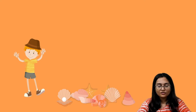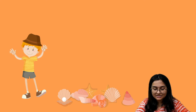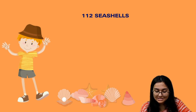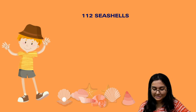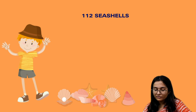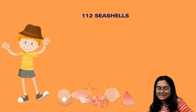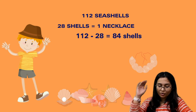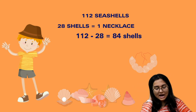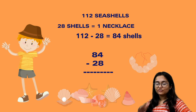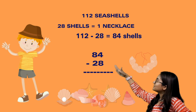Then we have sea shells. Dhruv lives near the sea and thought of making necklaces for his 3 friends. He collected 112 sea shells by evening. He said he would make a necklace of 28 shells — will these shells be enough for all his friends? He used 28 shells for the first necklace: 112 minus 28 leaves 84. Then he took 28 more for the second necklace, so we subtract 28 from 84 again.